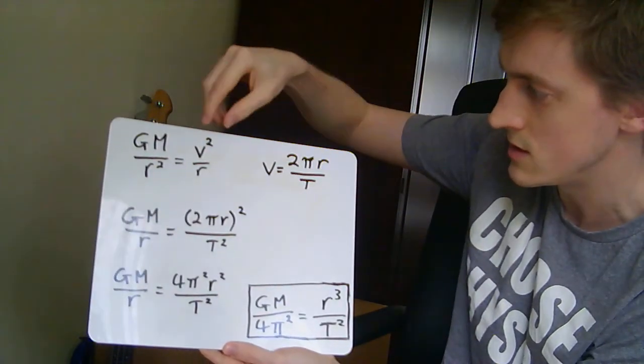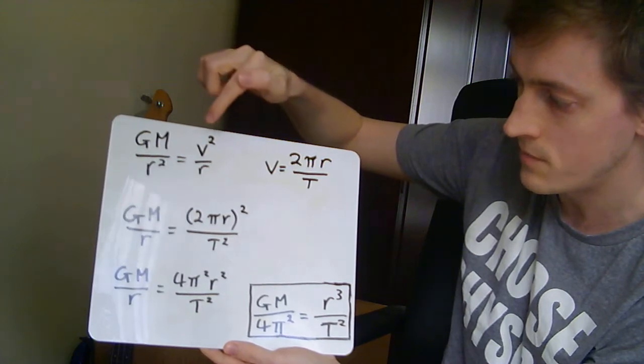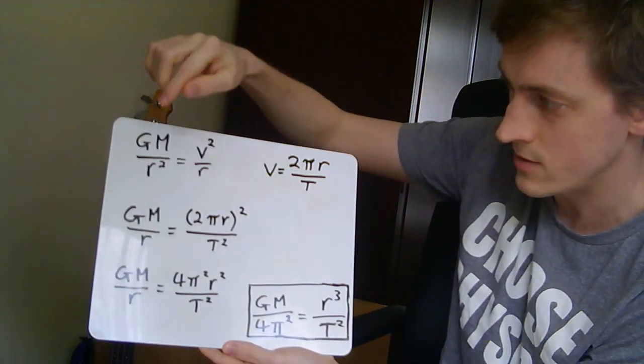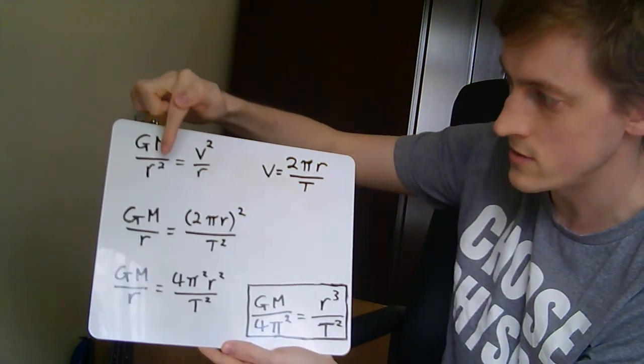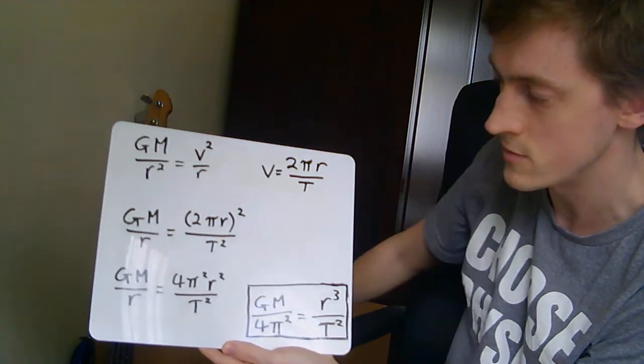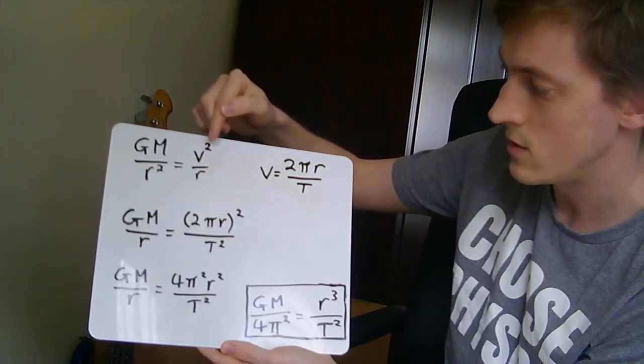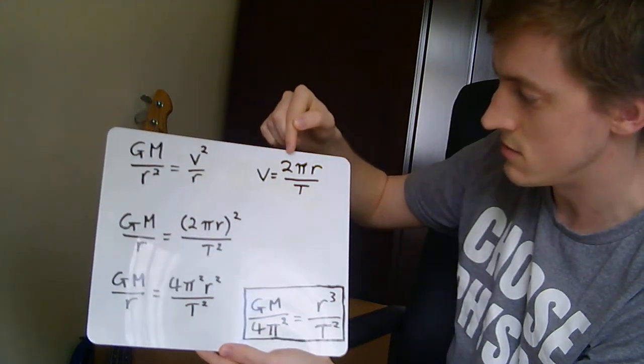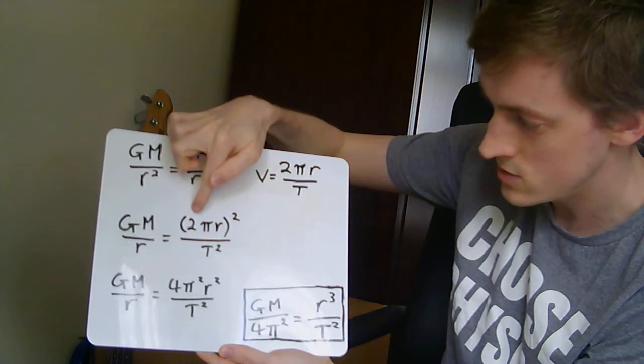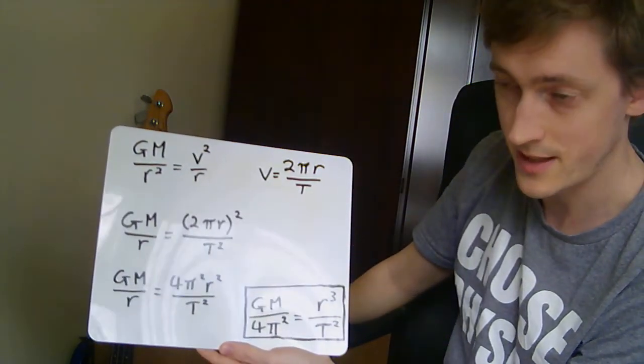So this 2πr over T is going to go in there. Before we do that, you might have noticed, instead of having an r squared down here, I've got an r down here. Basically all I've done is noticed that this is divided by r squared and this is divided by r, so I've just got rid of an r on both sides. And then the second thing I've done is instead of having a v squared, I've actually substituted in 2πr over T and squared all that. So instead of having v squared, I've got 2πr all squared over T squared.